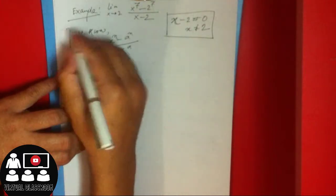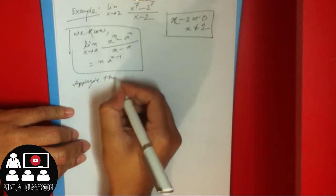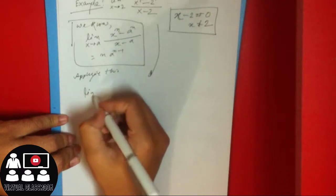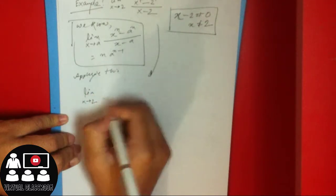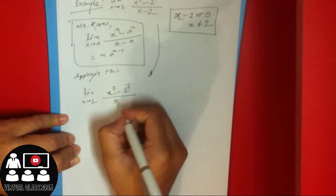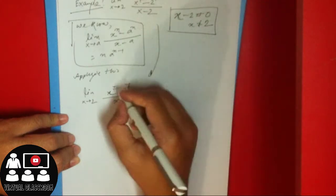So we apply this formula. Here a equals 2 and n equals 7, so we get 7 times 2 to the power 7 minus 1.